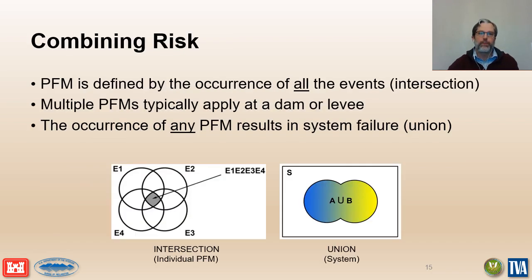Failure for an individual potential failure mode requires the occurrence of all the events that make up that failure mode — defined and calculated as the intersection of those events. Multiple potential failure modes typically apply at any given dam or levee, meaning failure of the system can occur due to any one or more of the individual potential failure modes. Risk for the system is defined and calculated as the union of the individual potential failure modes.